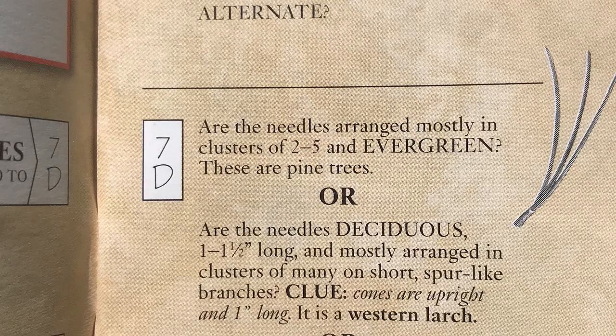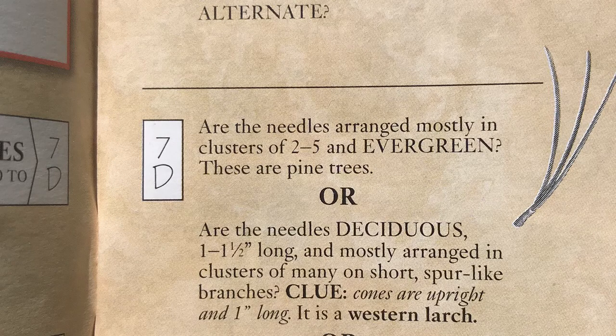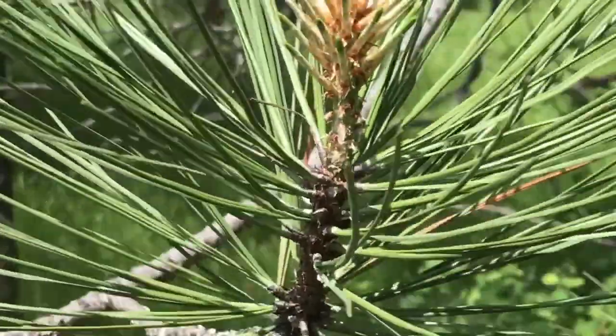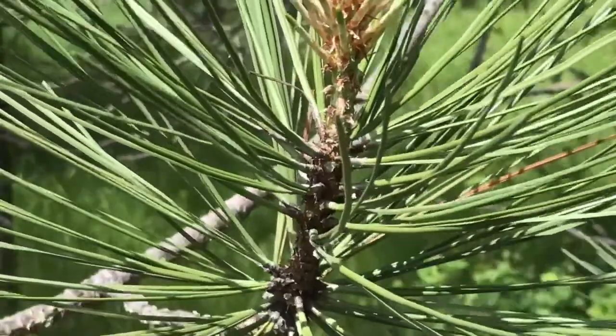7D: Are the needles arranged mostly in clusters of 2 to 5 and evergreen? These are pine trees. Notice the other options — these needles are in clusters.